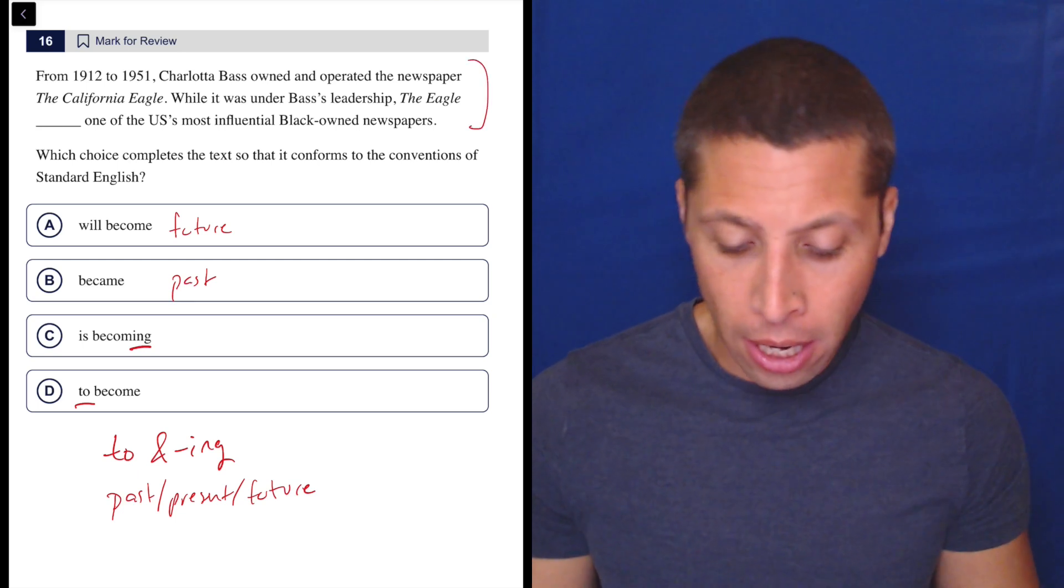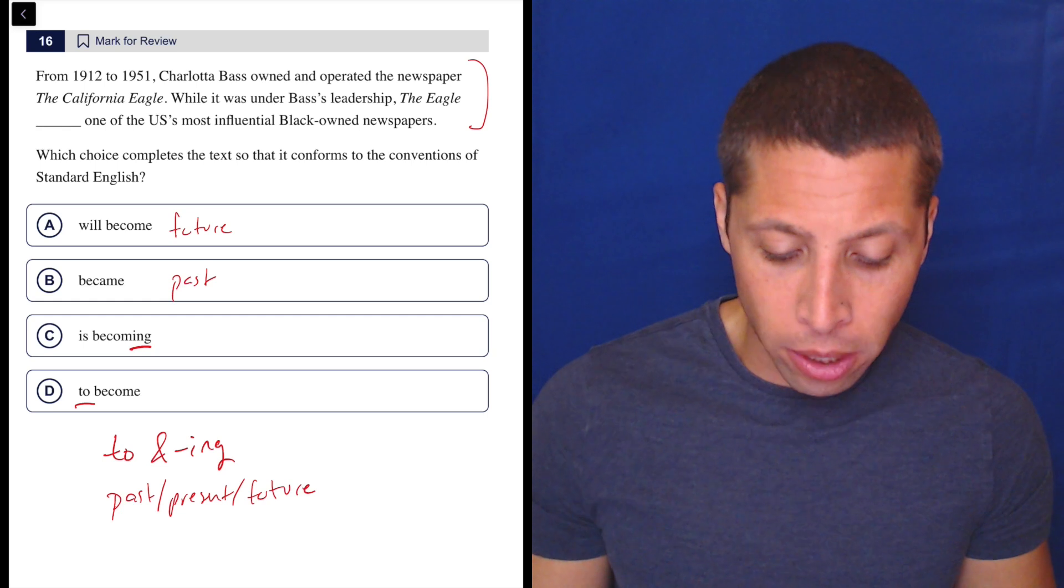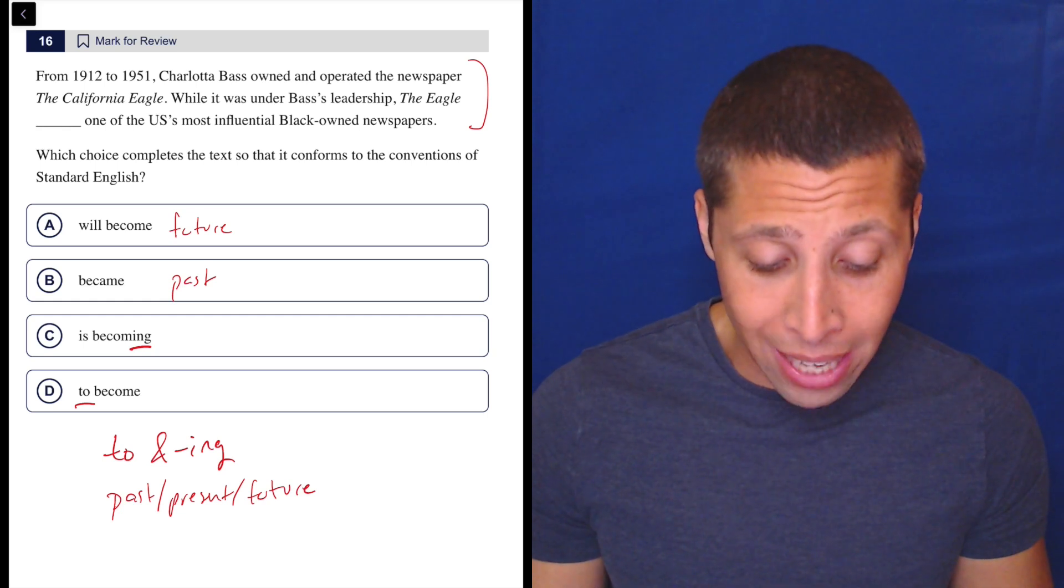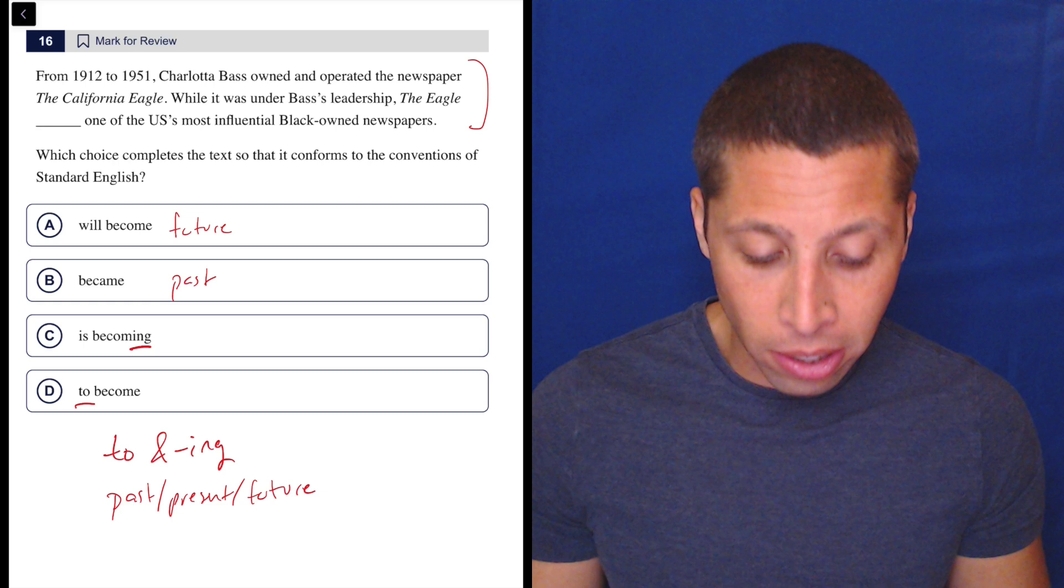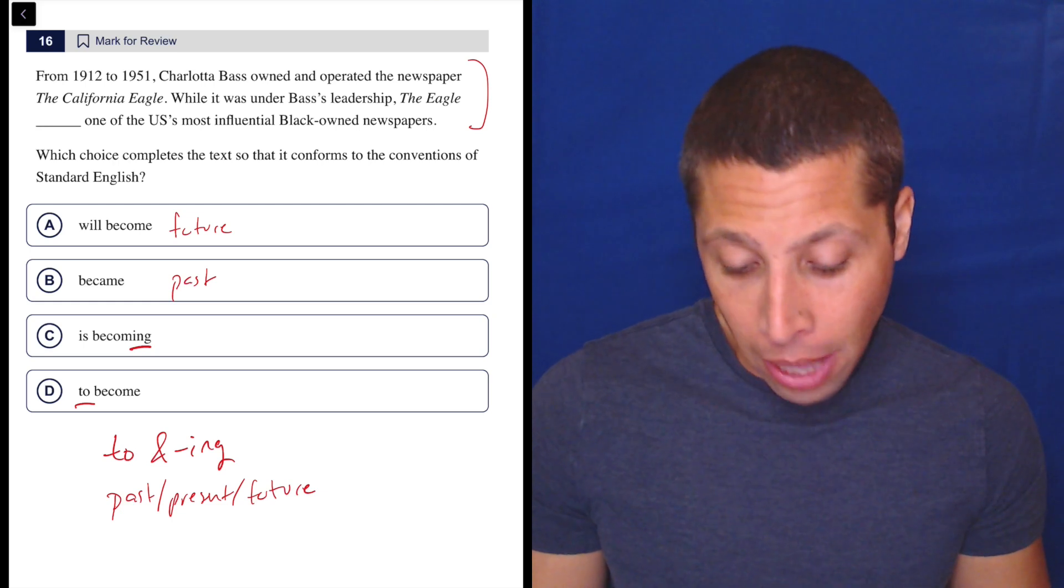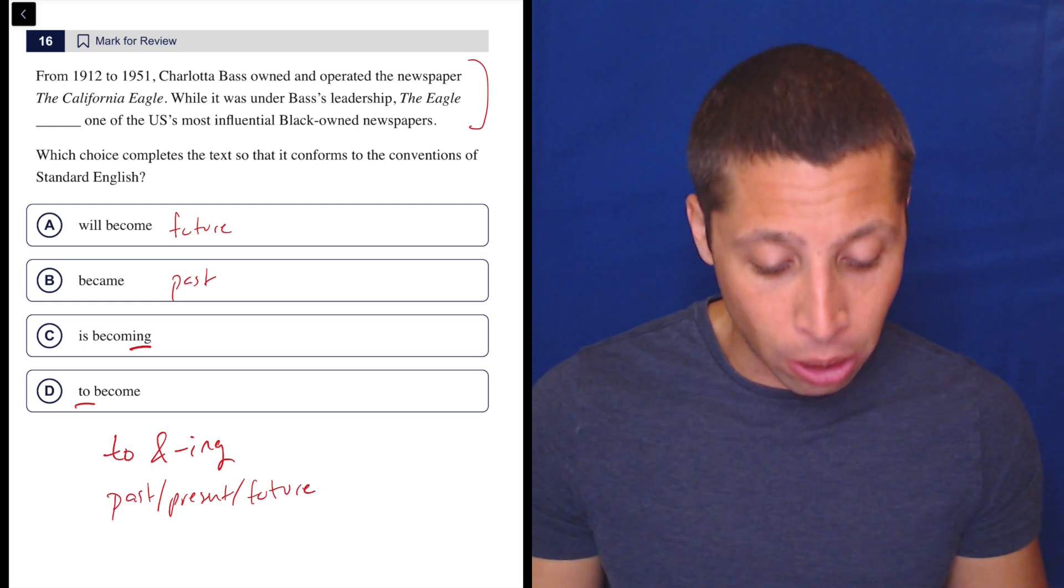So let's look at the whole passage. From 1912 to 1951, Carlotta Bass owned and operated the newspaper, the California Eagle. While it was under Bass's leadership, the Eagle blank, one of the US's most influential black owned newspapers.